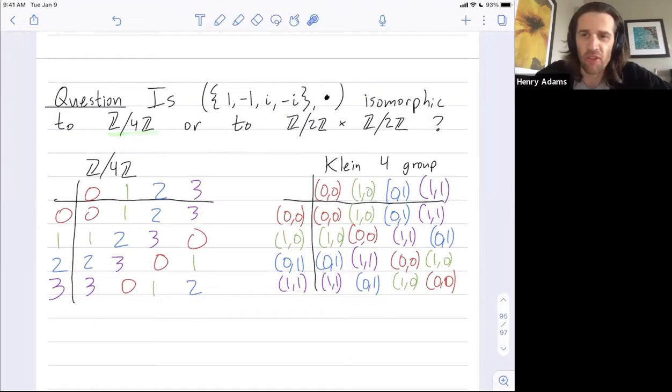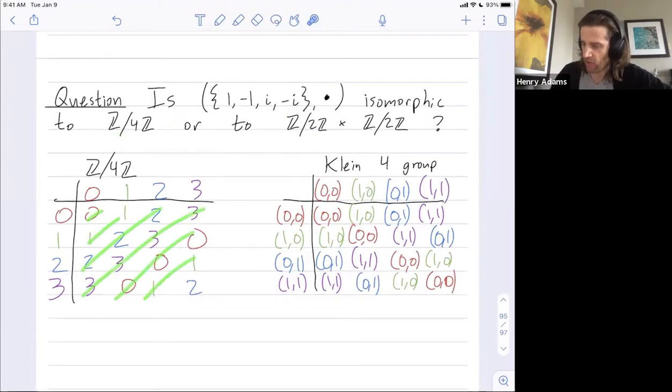One is z mod 4z, the integers mod 4. It's pictured down below, and in the multiplication table, you get this diagonal banded structure. The other isomorphism class is the Klein 4 group, which is also z mod 2z cross z mod 2z. And here, I like to describe the structure as this checkerboard pattern.